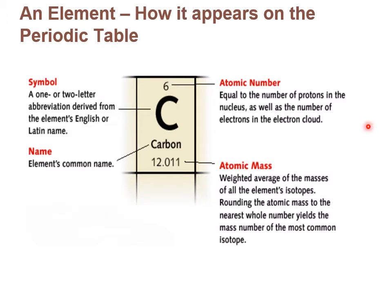So an element as it appears on the periodic table: there's a number at the top, a number at the bottom, the name of the element, and its symbol. The symbol is a one- or two-letter abbreviation derived from the element's English or Latin name. The number on top is the atomic number, which equals the number of protons in the nucleus as well as the number of electrons in the electron cloud. The bottom number is the atomic mass — the weighted average of the masses of all the element's isotopes.